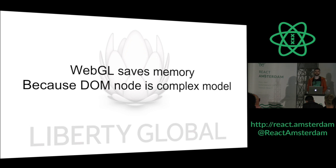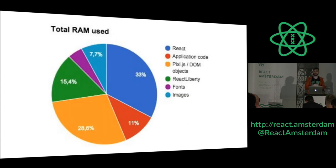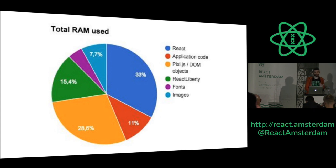Every DOM node has hundreds of properties and it takes a lot of memory. So when we started to benchmark — we benchmark really a lot because we care about performance and how much RAM it takes — we found that if we build an application with DOM with the same amount of nodes, DOM objects eat more than half of our memory footprint.